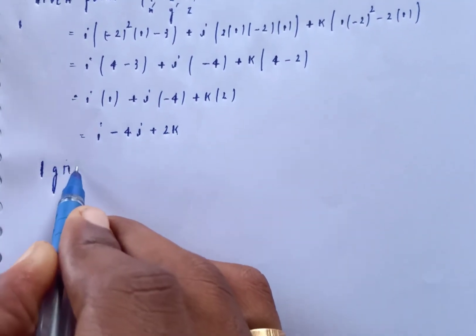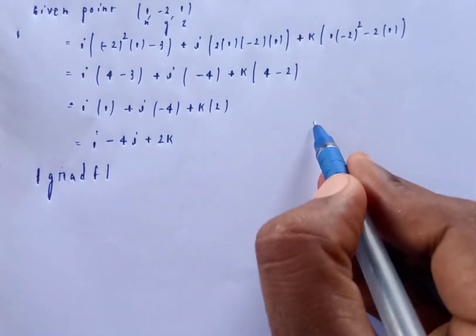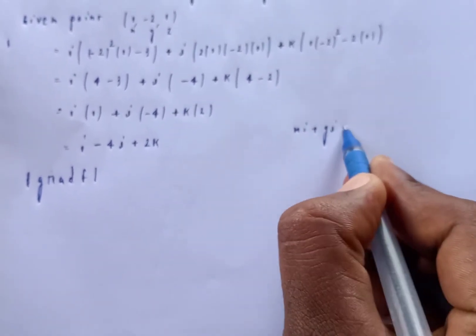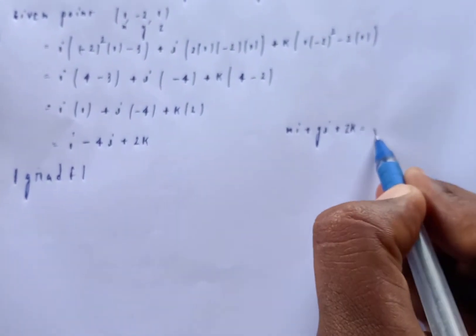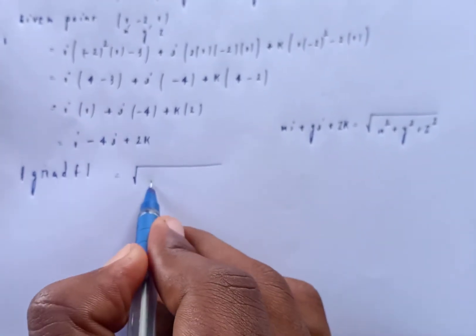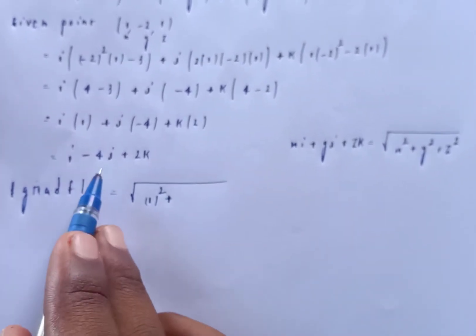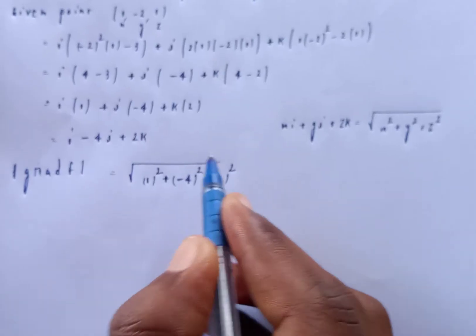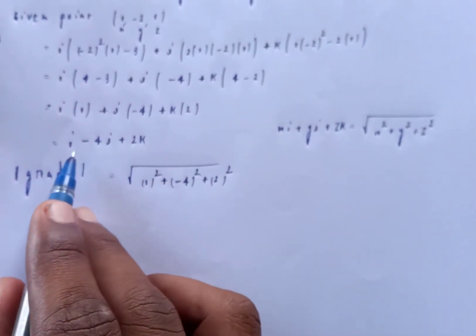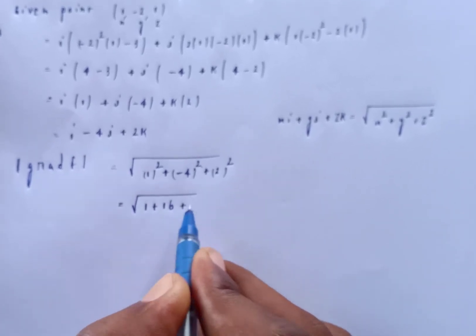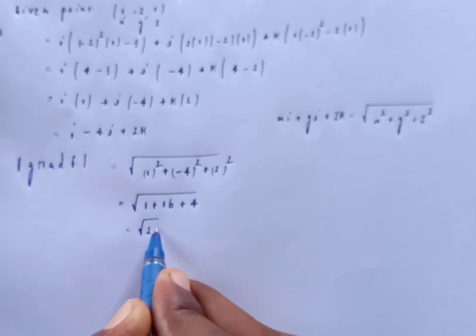Now compute |grad F1|. Using the formula |xi + yj + zk| = √(x² + y² + z²), we get |grad F1| = √(1² + (-4)² + 2²) = √(1 + 16 + 4) = √21.